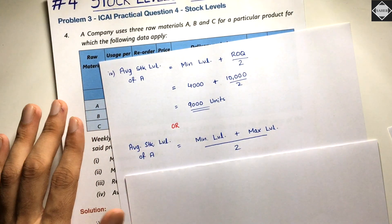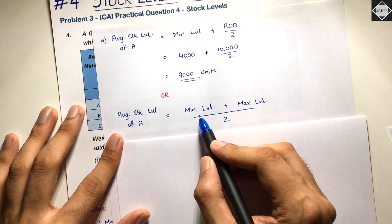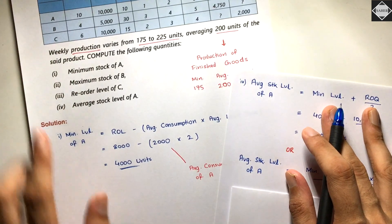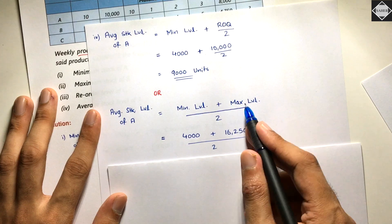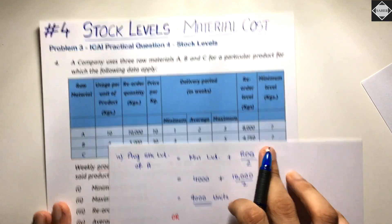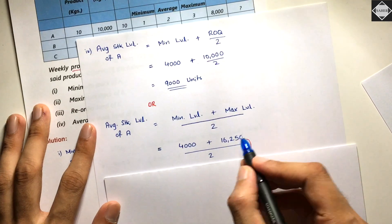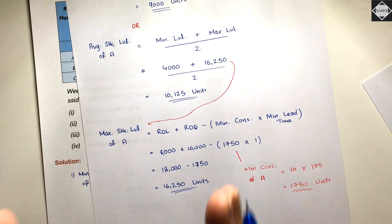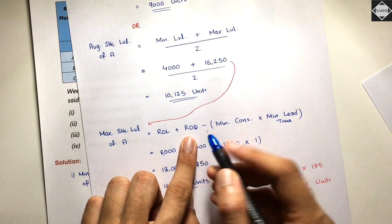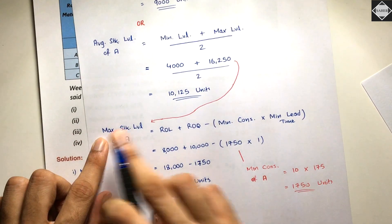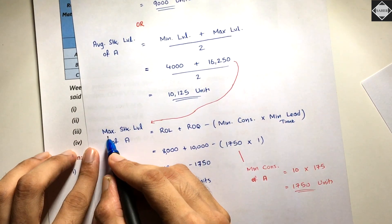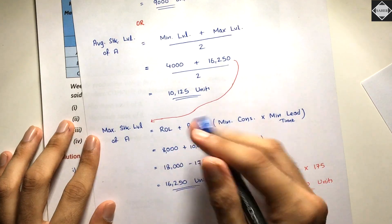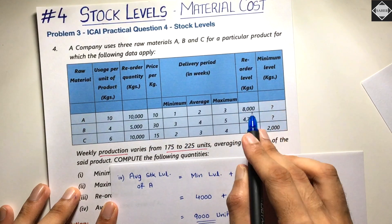Using the second formula: average stock level equals minimum level plus maximum level, divided by two. Minimum level is 4,000 units. Maximum level of A has not been calculated previously and is also not given in the question, so we need to calculate it. The formula for maximum stock level is reorder level plus reorder quantity minus minimum consumption into minimum lead time.